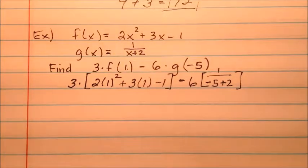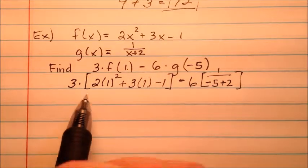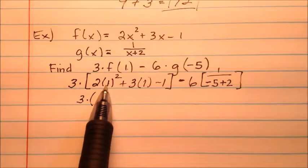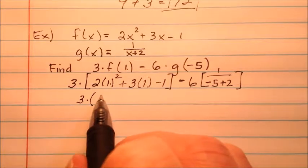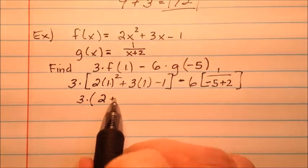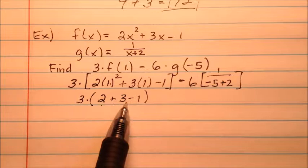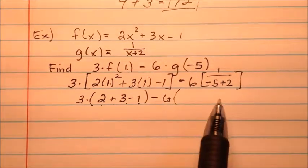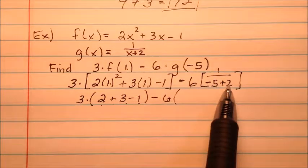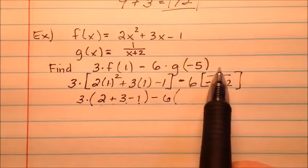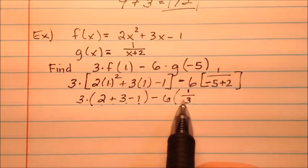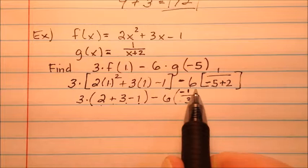So we have this huge expression here. I'm just going to use the order of operations and slowly simplify it. So 3 times, 1² is just 1, and then 2 times 1 is 2, 3 times 1 is 3, so inside here we have 2 + 3 - 1. And then we'll say minus 6 times, this negative 5 plus 2 is negative 3, so it'll be 1 over negative 3, but we don't really like to have that negative in the denominator, so I'll just bring it up top.